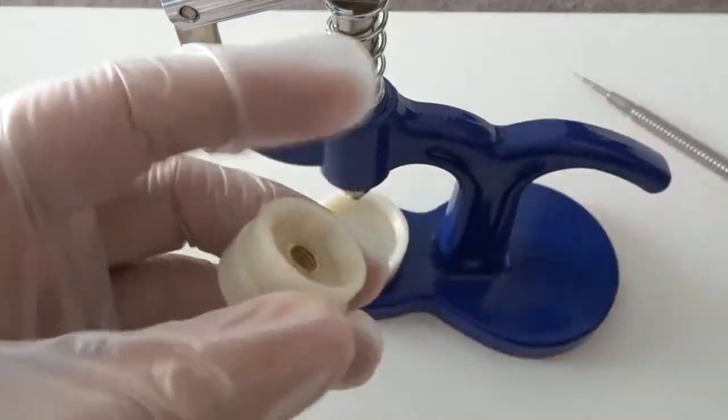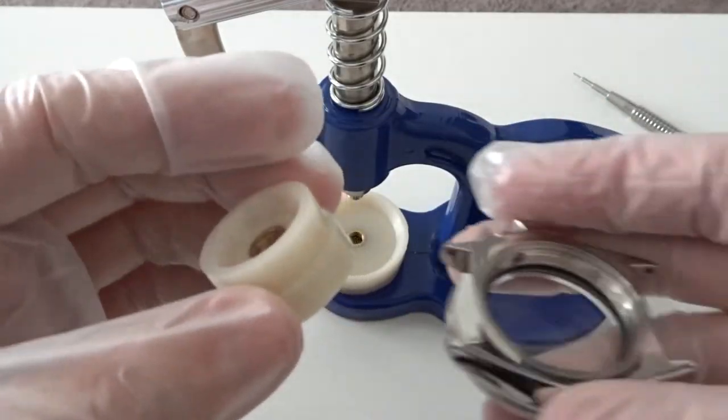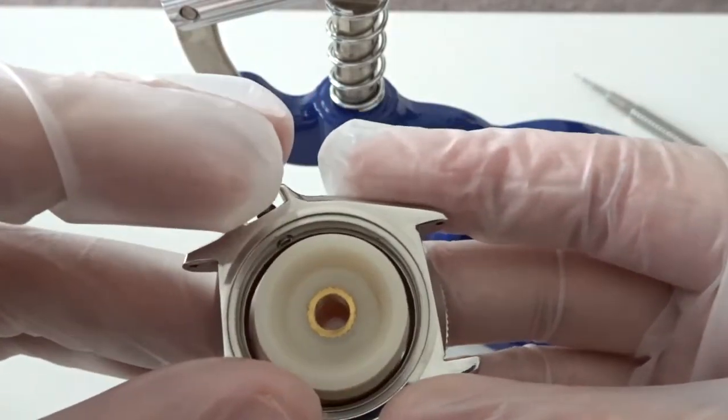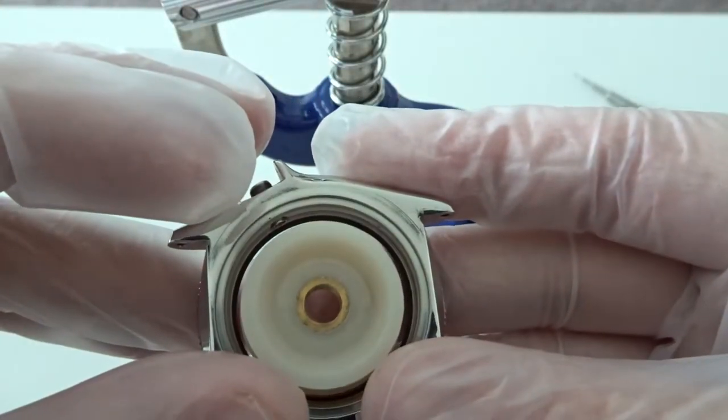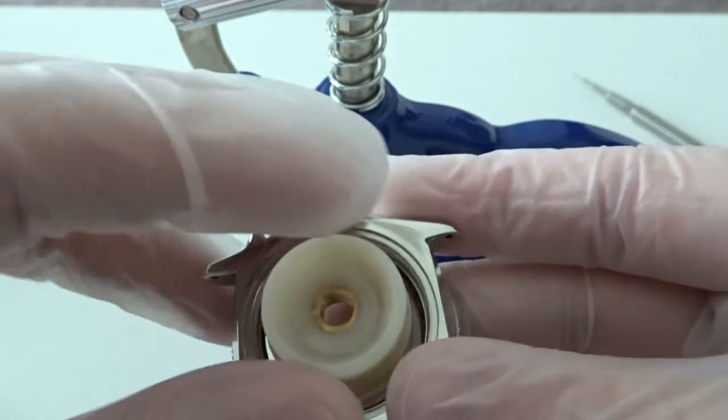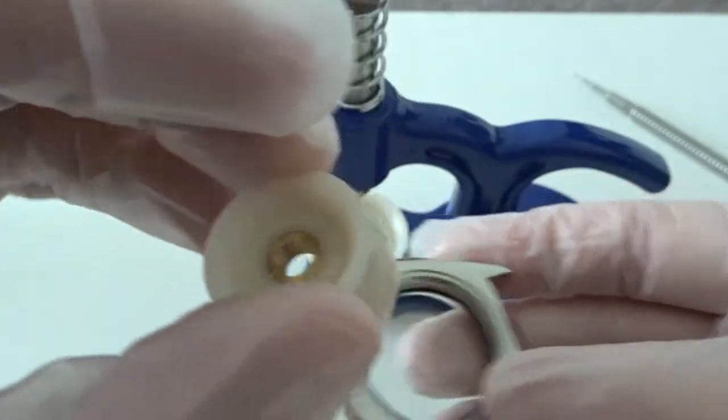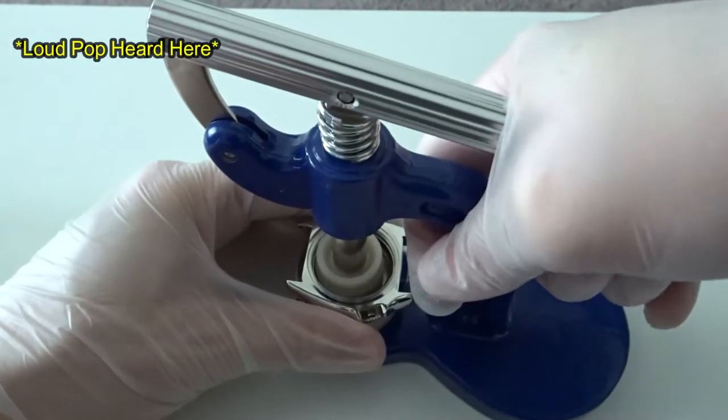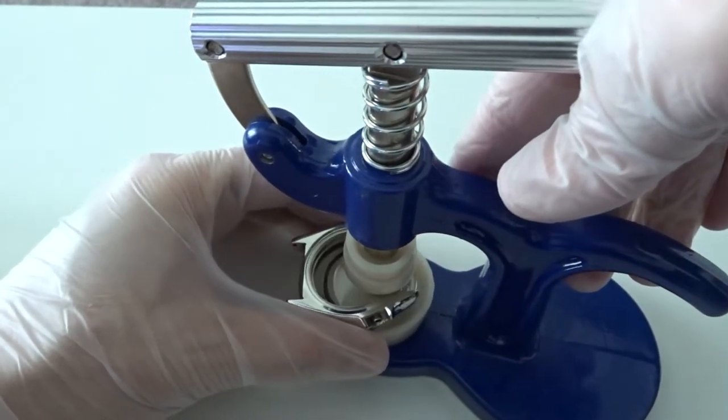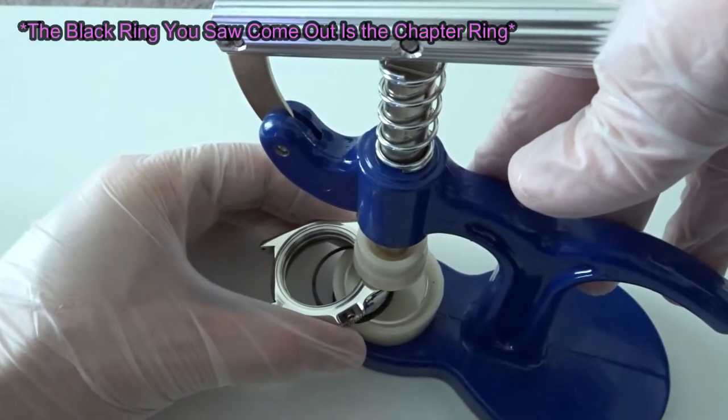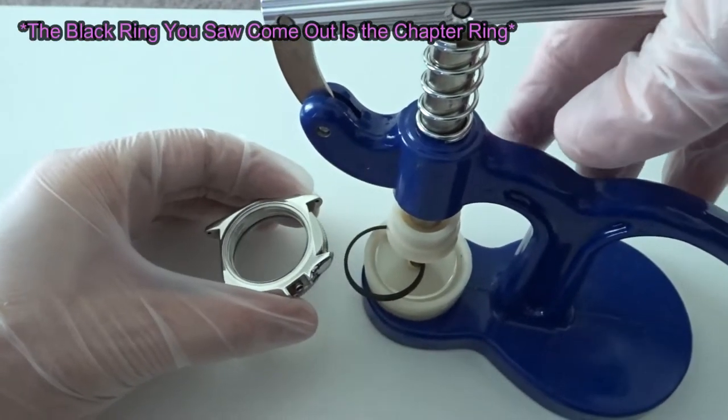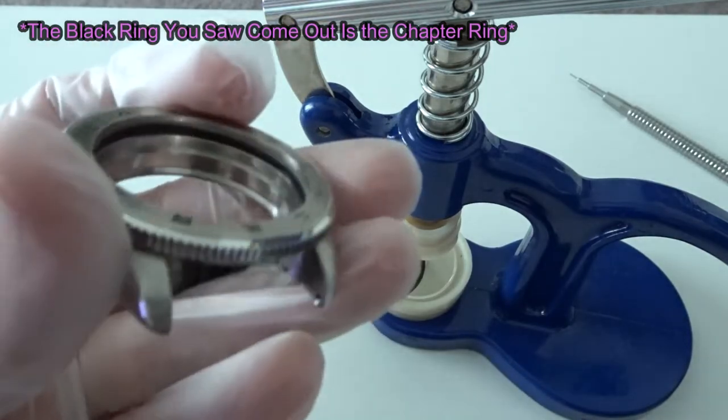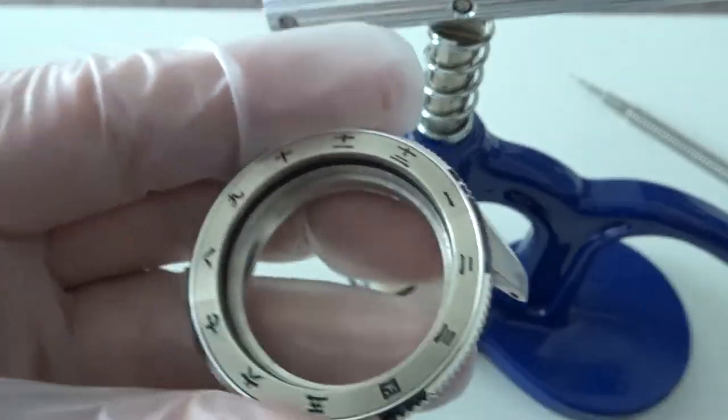Now you have to press out the old crystal. Make sure you choose a press bit that's sized properly and not so large so as it will damage the chapter ring. For the bottom press bit, try to find one that will support the bezel but still allow the old crystal to drop down into it. Now that the old crystal is out, make sure that the crystal gasket is still in place. Sometimes it comes out with the crystal, so if it did you need to make sure you put it back into place before installing the new crystal.